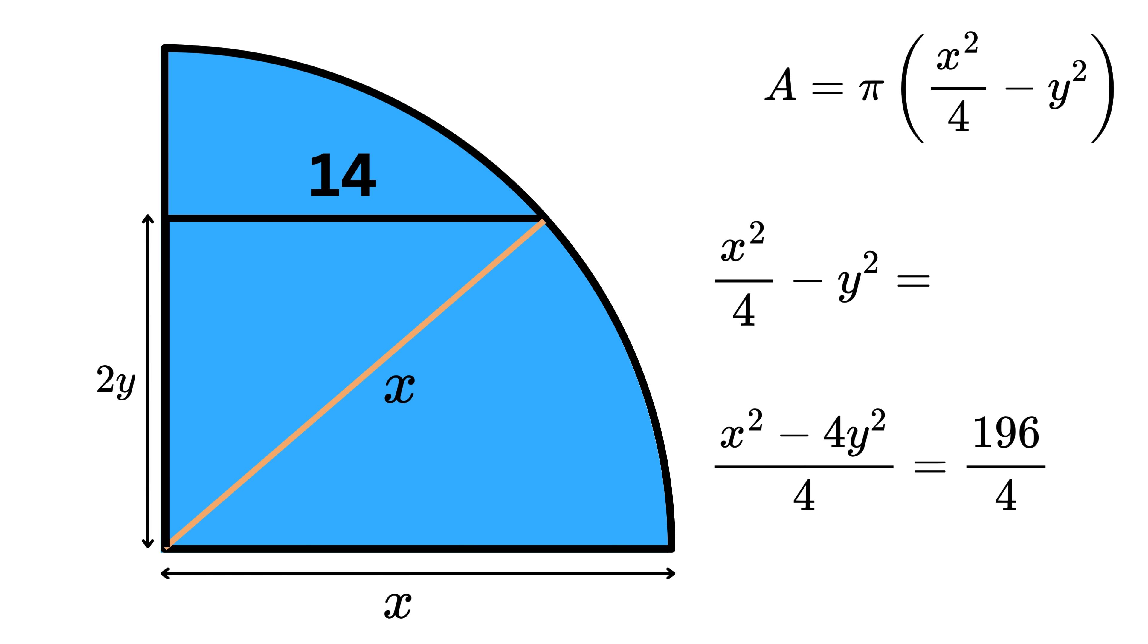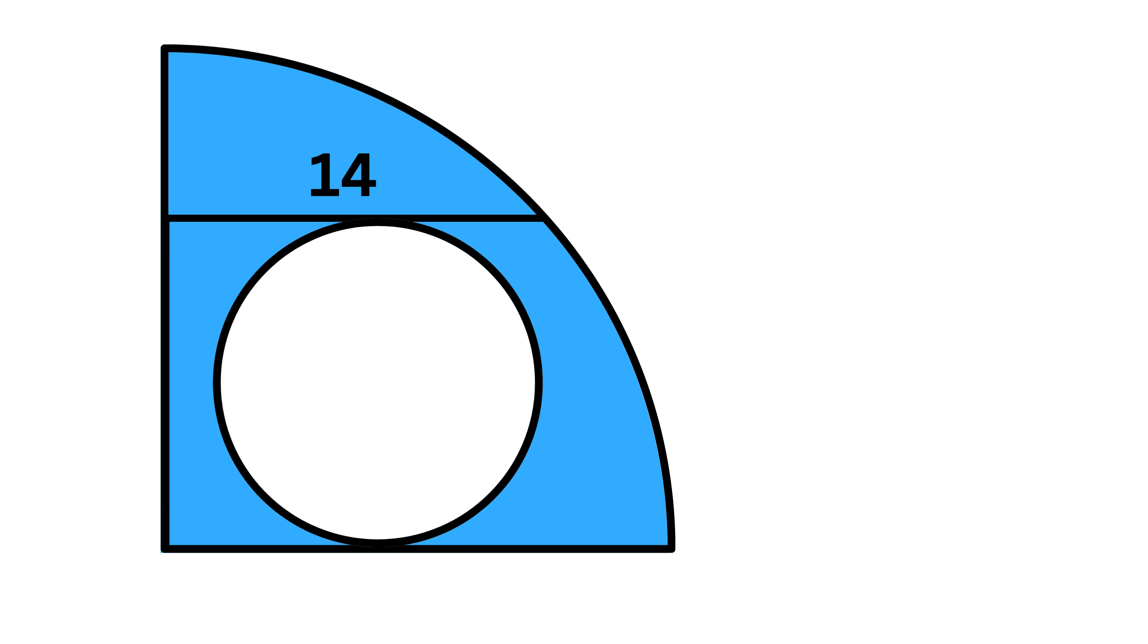Next, let us divide the whole equation by 4. We get x²/4 - y² = 196/4 or 49. But hey, if you remember our first equation, this expression was exactly what we needed for the shaded region area. So substitute this value back into that formula. That gives us the area of the shaded region as π times 49.